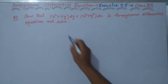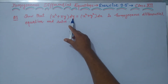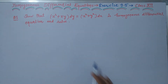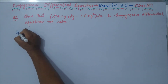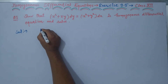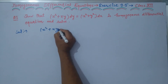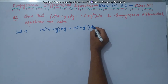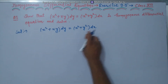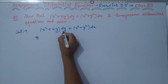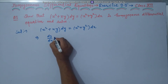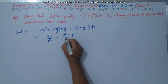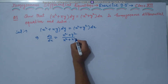Question 1: Show that (x² + xy)dy equals (x² + y²)dx is a homogeneous differential equation, and hence solve it. The given differential equation is (x² + xy)dy equals (x² + y²)dx. Dividing both sides by dx and then by (x² + xy), this becomes dy/dx equals (x² + y²) divided by (x² + xy).